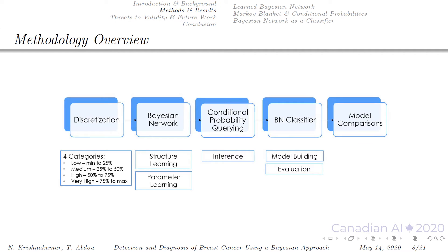On this slide is the methodology overview for our research. For discretization, we categorized numeric variables into four categories using quartiles: low, medium, high and very high levels. In the Bayesian network step for structure learning, we used a greedy hill climbing search algorithm and a key information criterion metric. For parameter learning, the Peter-Clark algorithm was implemented using G-squared statistic test with significance alpha level 0.05. For conditional probability querying, we looked at inference using the likelihood weighting method. We then built our proposed BN classifier using the Bayes method to fit parameters and evaluated our model. In the last step, we compared models from literature to our proposed model.